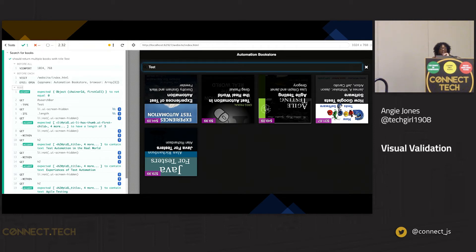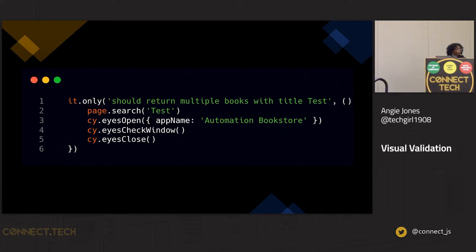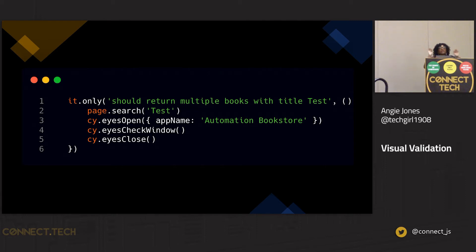Let's change this to add some visuals. It's very simple — three commands. You say, open your eye. This API integrates with Cypress so you can just use cy.doc. Then you say check window — that's what does the magic. It takes the screenshot and sends it up to the Applitools cloud. If this is the very first time the test is run, it automatically saves that as your baseline. If it's a regression run, it finds the baseline and compares for differences. And once you've said check window, the final command is close your eyes. We're done here.